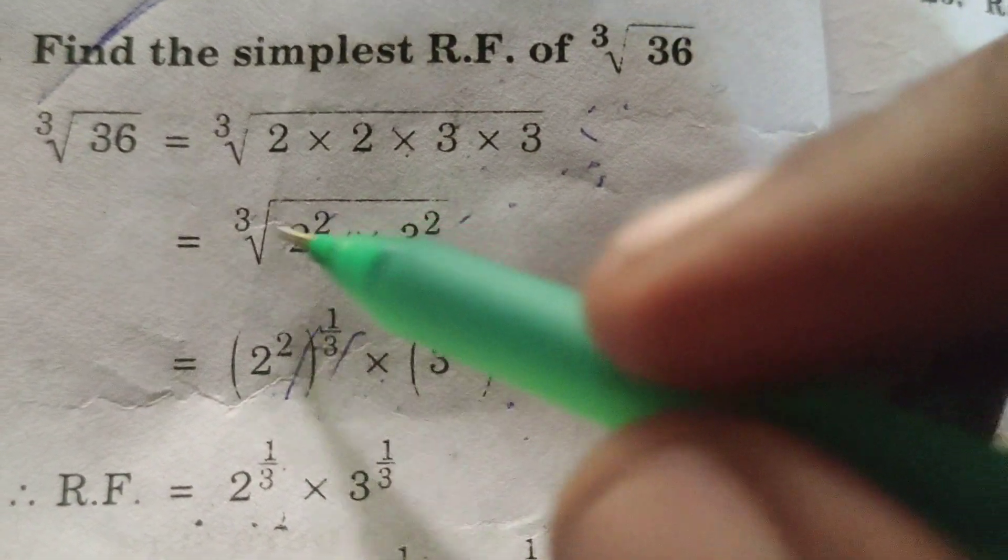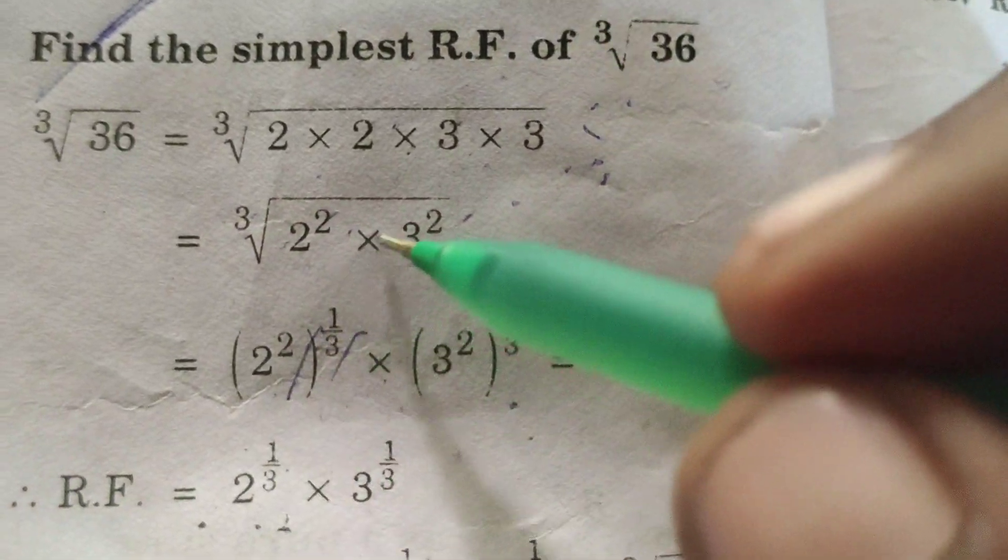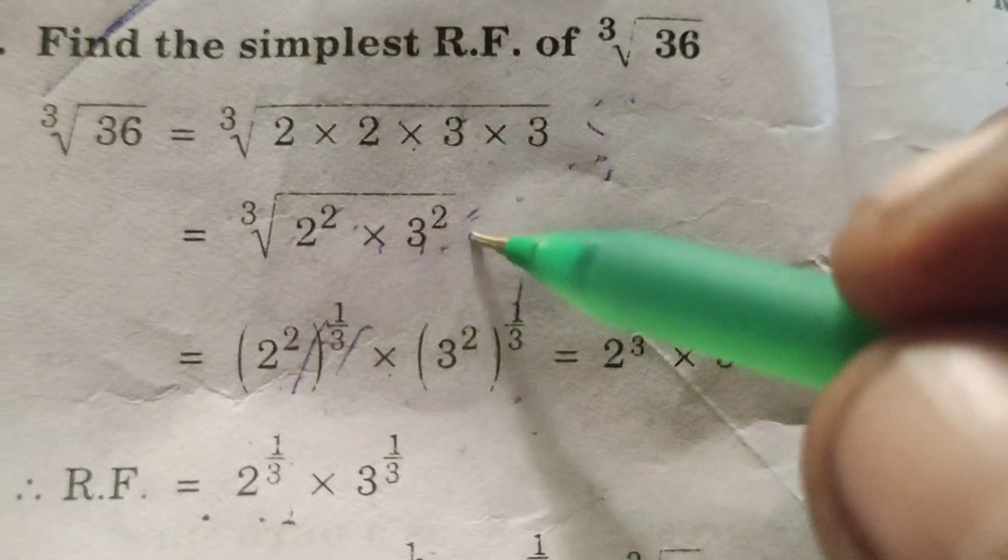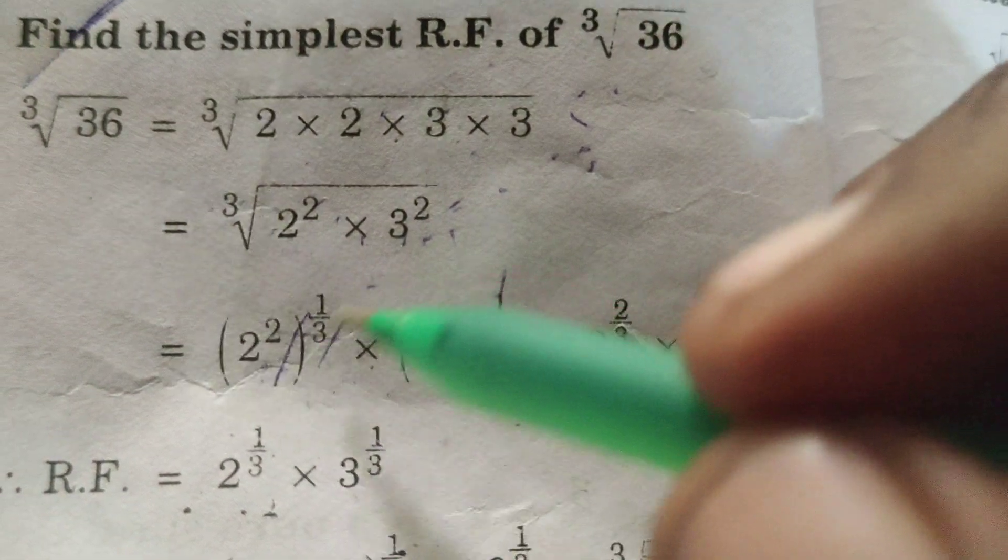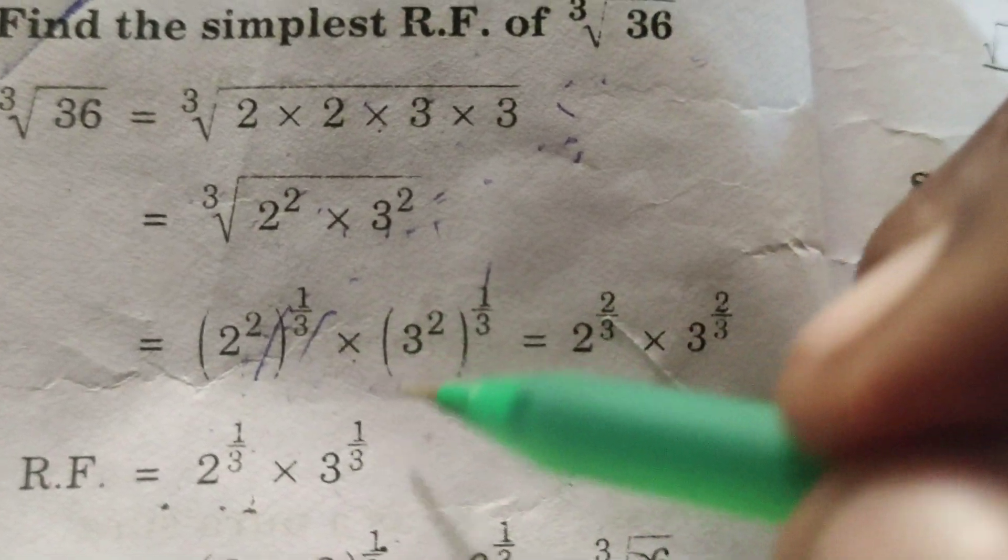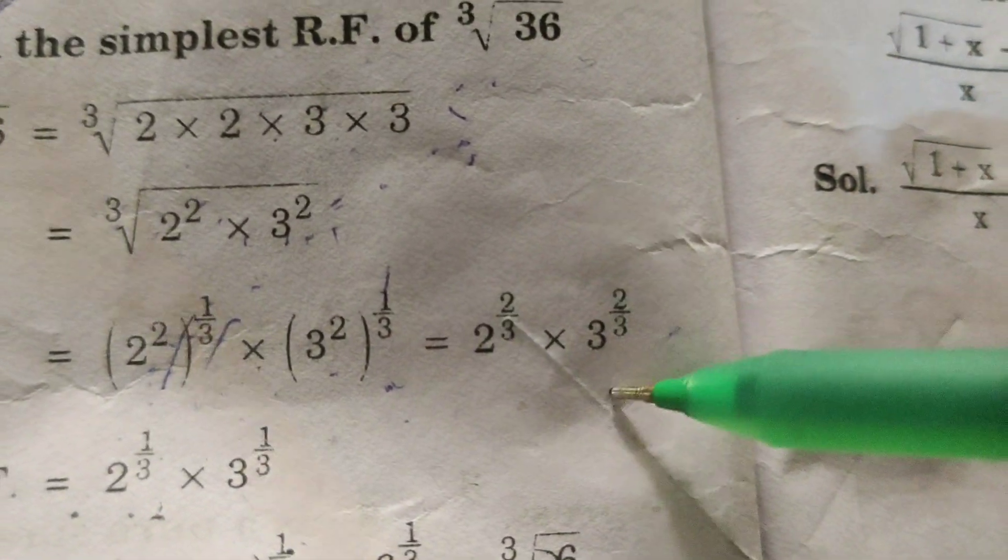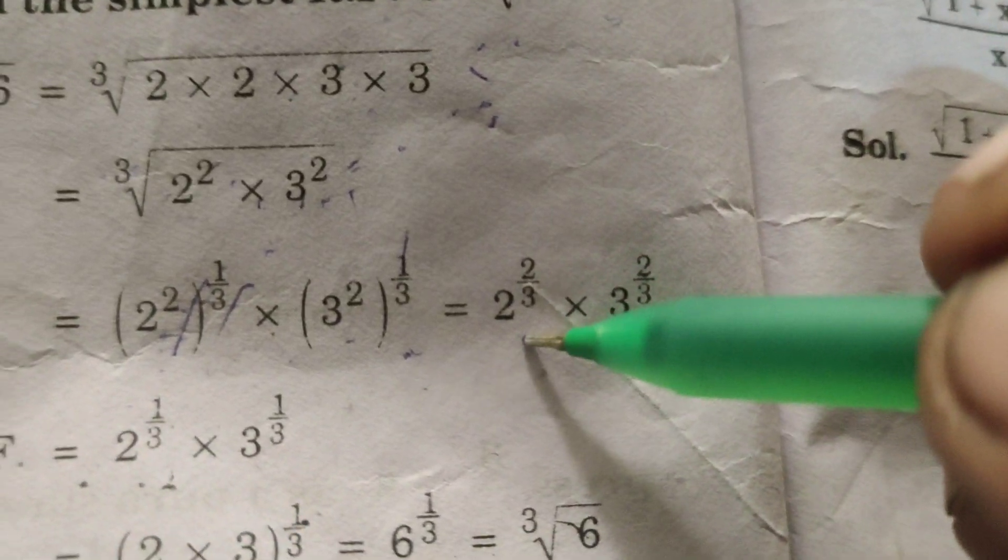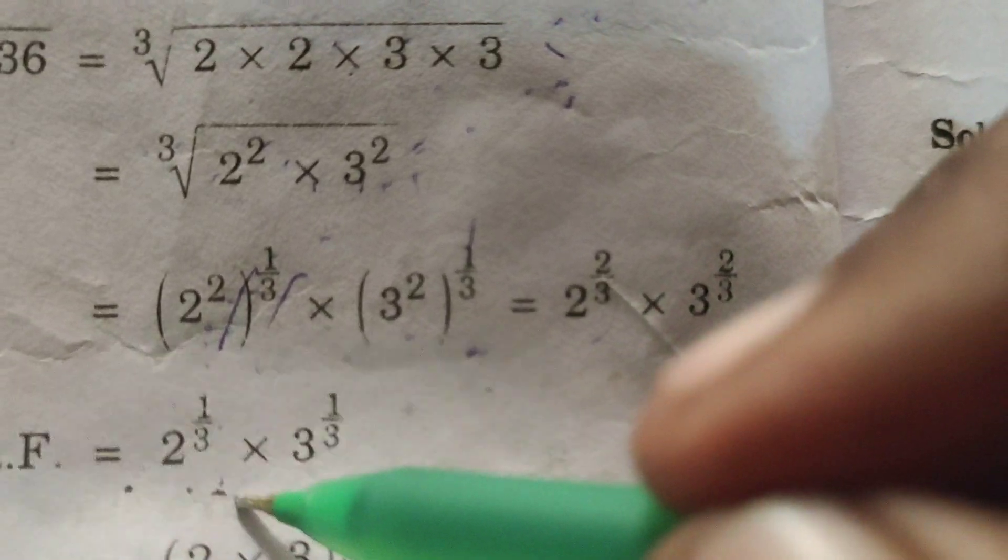Here (2²)^(1/3) × (3²)^(1/3). This can be written as 2^(2/3) × 3^(2/3). This is 2 power here.